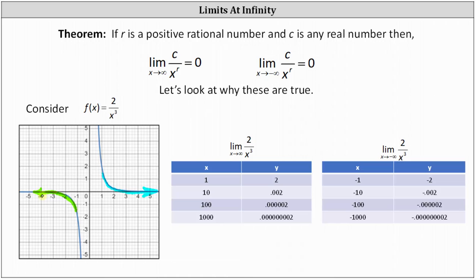We can also verify this using a table. In the first table, as x increases without bound (approaches positive infinity), the y values approach zero. Similarly, as x decreases without bound (approaches negative infinity), the function values again approach zero.